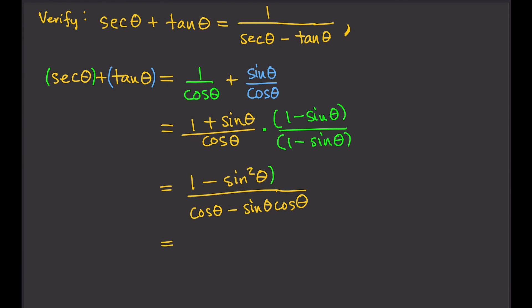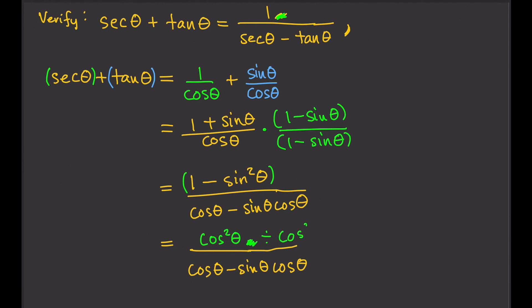This is familiar — we know that one minus sine squared theta equals cosine squared theta. So now we have cosine squared theta over cosine theta minus sine theta cosine theta. We want to get one in the numerator, but we have cosine squared theta. So we divide both the numerator and the denominator by cosine squared theta.